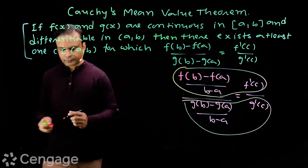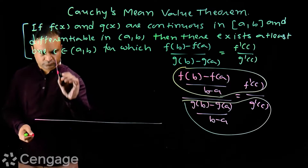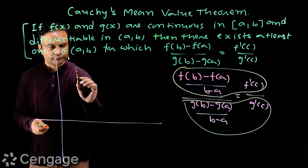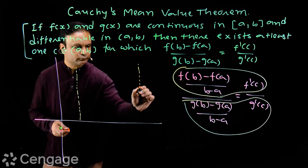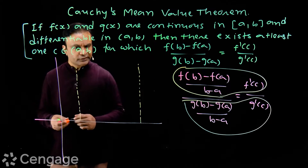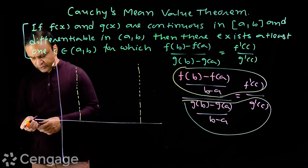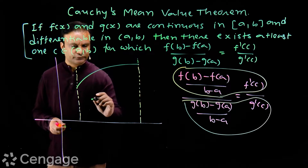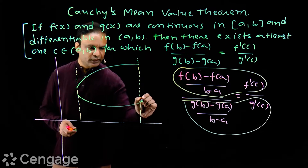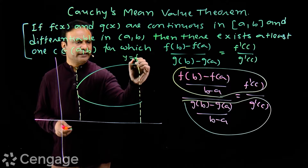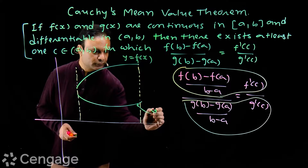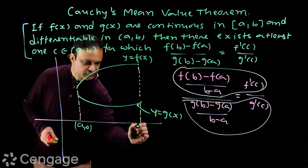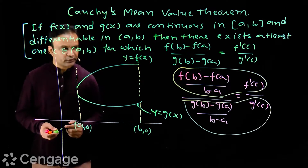Let's see on the graph. We consider interval [a, b]. In this interval we draw the graphs of f(x) and g(x). So we have the graph of f(x) — that is y = f(x) — and the graph of g(x) — that is y = g(x). This is point (a, 0) and this is point (b, 0), so we have interval [a, b].